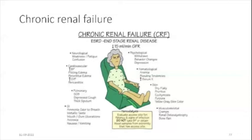Possible glandular involvement such as minor salivary gland atrophy. Paleness of oral mucosa and skin due to decrease in the synthesis of erythropoietin. In patients with end-stage or untreated renal disease, uremic stomatitis is usually seen.